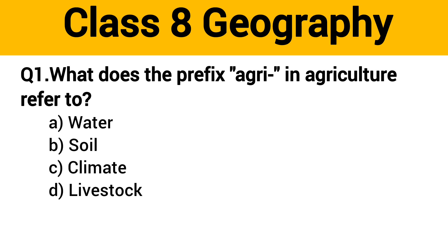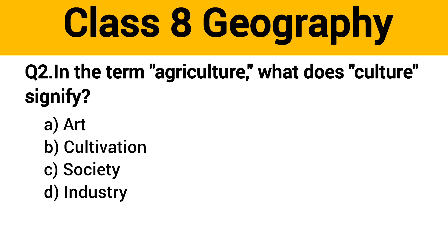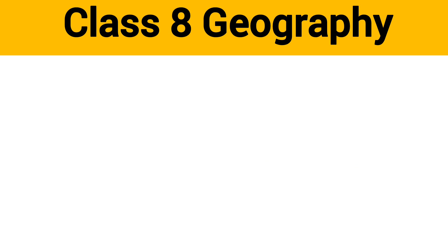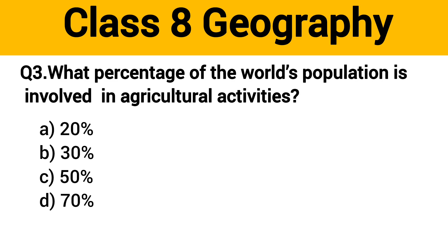Question number 1: What does the prefix 'agri' in agriculture refer to? The right answer is option B: soil. Question number 2: In the term agriculture, what does 'culture' signify? The right answer is option B: cultivation.